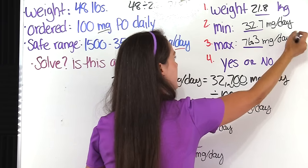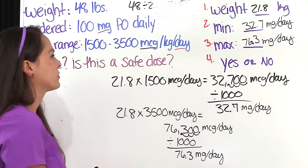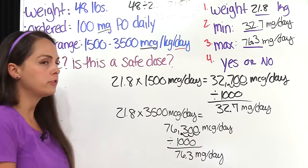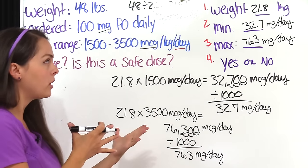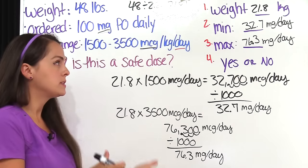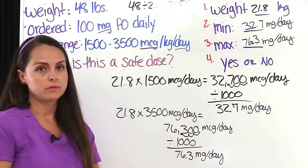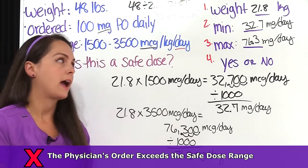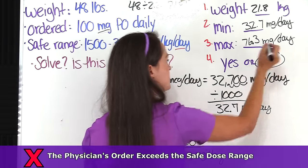We're not done just yet — we need to compare that with what was actually ordered. The physician ordered 100 milligrams by mouth daily. Our safe dose range is 32.7 to 76.3 milligrams per day. The ordered dose of 100 milligrams exceeds what the patient can actually have, so the answer is: no, this is not a safe dose.